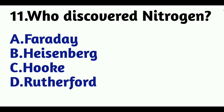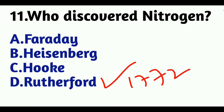Question 11: Who discovered Nitrogen? Option A: Faraday, Option B: Heisenberg, Option C: Hooke, Option D: Rutherford. The answer is Option D, Rutherford, in the year 1772. The atomic number of nitrogen is 7.